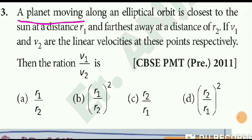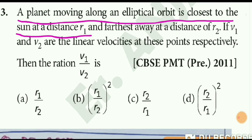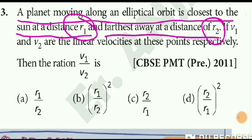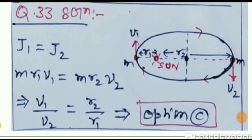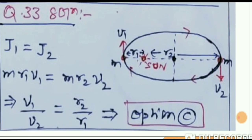Question number 33: a planet moves in an elliptical orbit. It is closest to the Sun at distance r1 and farthest at distance r2. The linear velocities at these points are v1 and v2 respectively. By conservation of angular momentum: m·v1·r1 = m·v2·r2, giving v1/v2 = r2/r1. This is a straightforward application of angular momentum conservation.